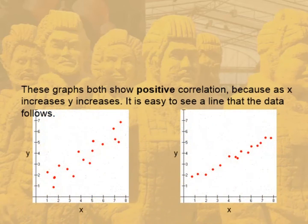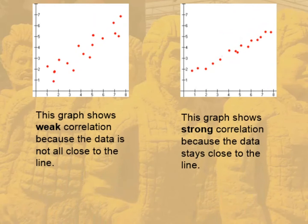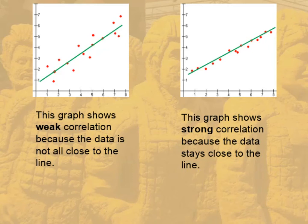These graphs both show positive correlation — as X increases, Y also increases. When the X variable goes up, the Y variable goes up. The graph on the left shows weak correlation because, although the line is clear, the data is not actually very close to it; all of the data is above and below as well as on the line. On the right-hand side, this graph shows very strong correlation because the data is very close to that line, so Y goes up very closely as X goes up.